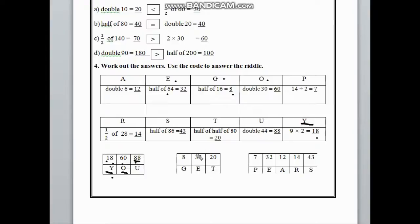The code of 88 is Y. And below 88... sorry, the code of 88 is U, not Y. So below 88, we have to write U.